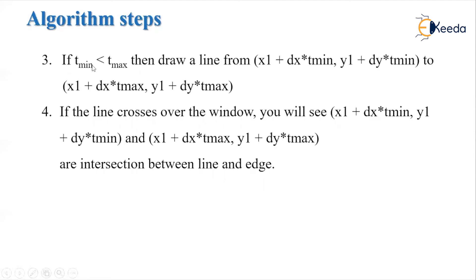We then compare t_min and t_max. If t_min is smaller, we draw the line using the parametric equations for the coordinates of the endpoints. We use these parametric equations to find the intersection between the line and the clipping window edge.